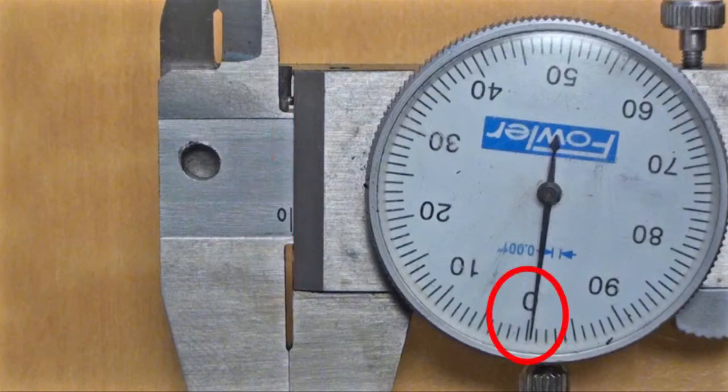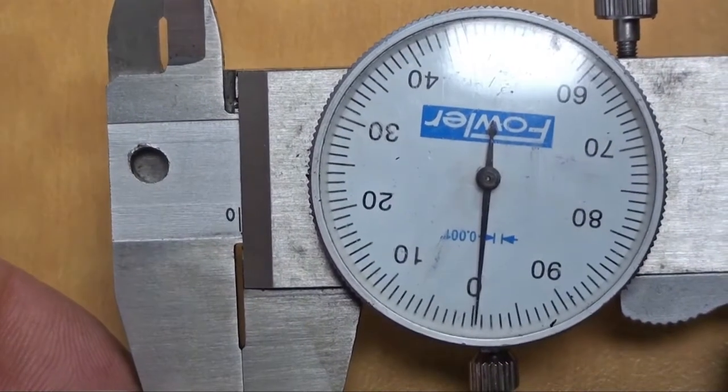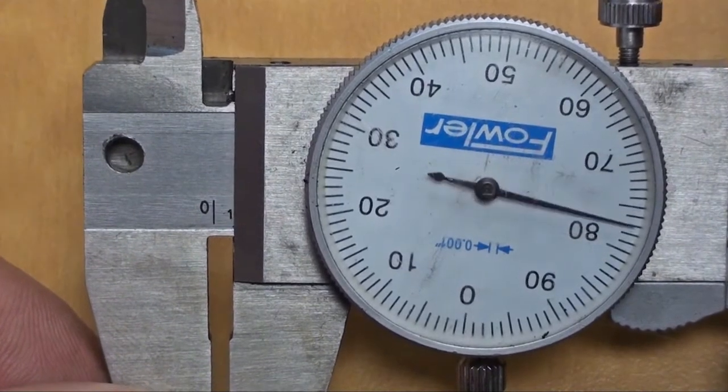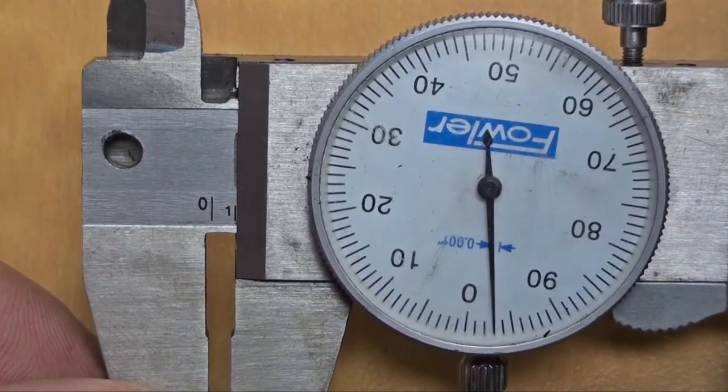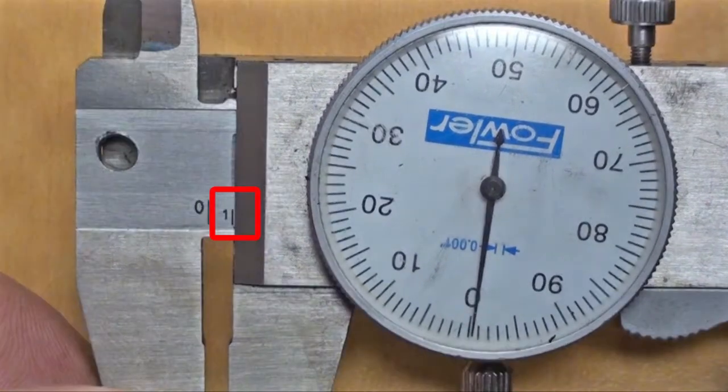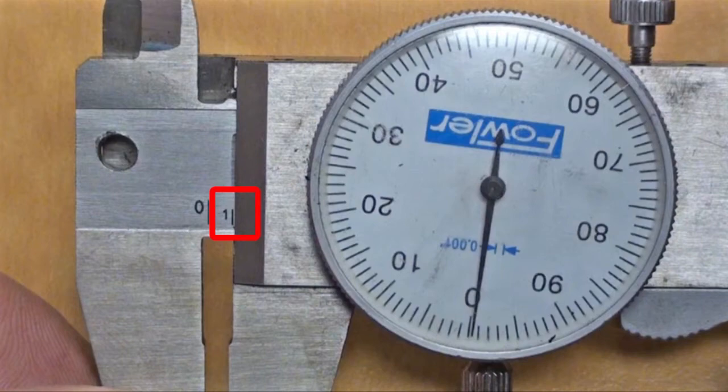When the slider is opened exactly 100 thousandths of an inch, the dial pointer will go around exactly one revolution. The trailing edge of the slider will now line up exactly with the 1, or 100 thousandths of an inch line, on the linear scale.